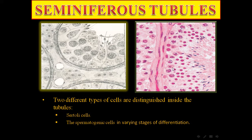Here we can see an H&E staining. Sertoli cells are pyramidal in shape with prominent nuclei — they are supportive. Spermatogenic cells include spermatogonia always in direct contact with the basement membrane, round spermatids, spermatozoa with tails, and elongated heads and tails.